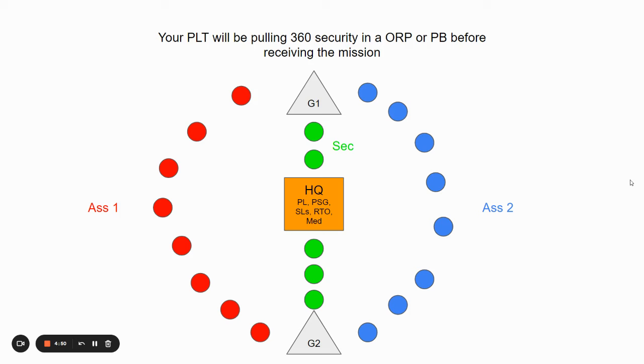The first thing is your platoon is going to be pulling a 360 degree security on an objective rally point or patrol base before receiving the mission. So what you're seeing right here is an ORP.